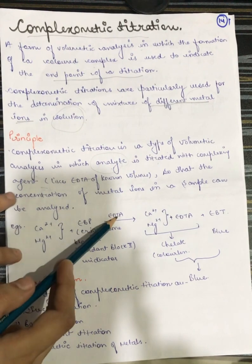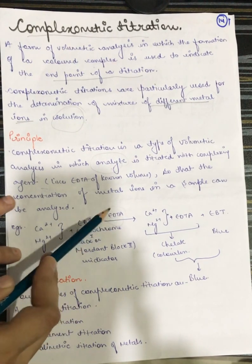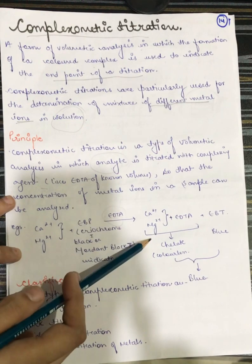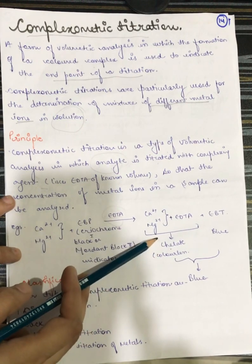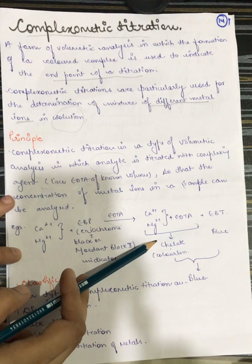So if we react with the complexing agent EDTA, then what we will obtain is a complex that is known as chelate.